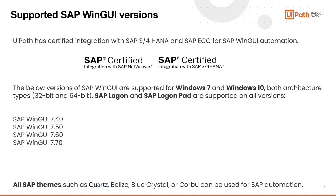A lot of questions are coming: which SAP WinGui versions are supported? Good news — UiPath has certified integration with SAP S/4HANA and SAP ECC for SAP WinGui. It means we are supporting all versions of Windows: Windows 7, Windows 10, different architectures, SAP Logon, SAP Logon Pad, and all commonly used SAP WinGui versions starting from 7.4 going up to the latest one, 7.7.